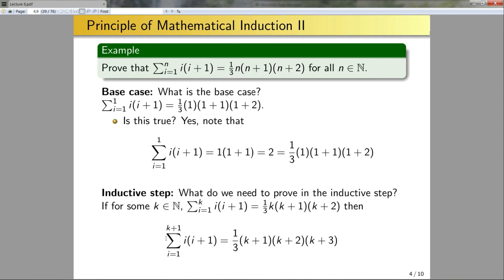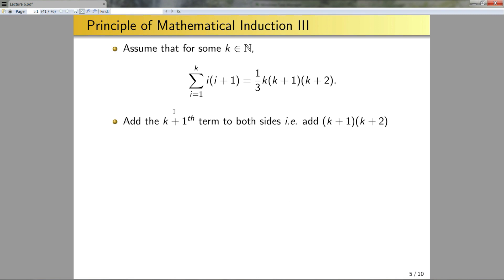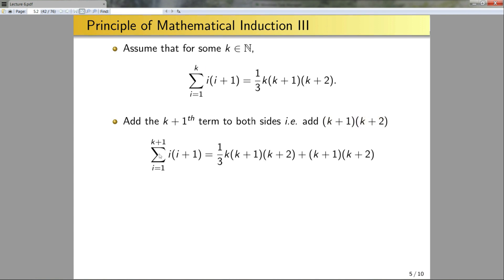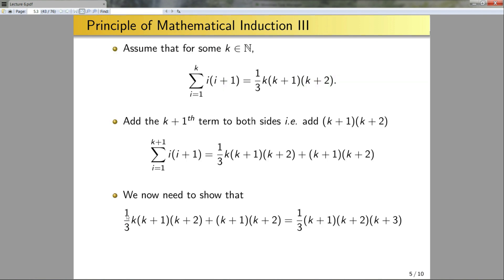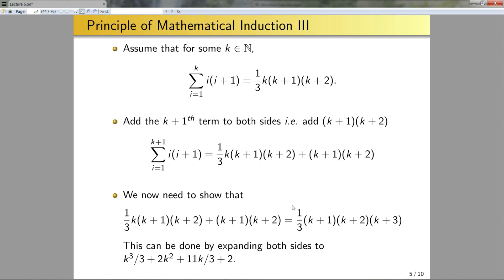The difference between the sum to k+1 and the sum to k is the extra term (k+1)(k+2). So we add that term to both sides of the equation. On the left side, we absorb the extra term into the sum by changing the upper index. On the right side, we have the previous expression plus the extra term. We then need to show algebraically that the right-hand side simplifies to the desired expression. Expanding both sides by multiplying everything out, we find they are equal to the same polynomial, proving the statement.